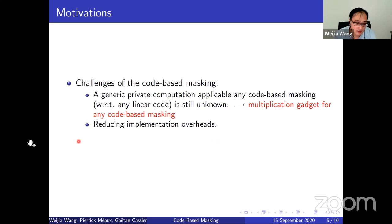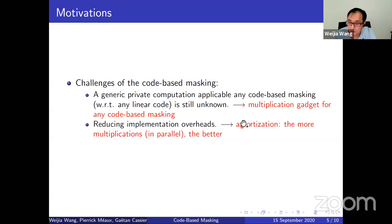In this work, we tackled those two challenges by proposing two contributions. First, we provide a multiplication gadget for any code-based masking with respect to any linear code. Second, we show a very nice property of code-based masking called amortization.